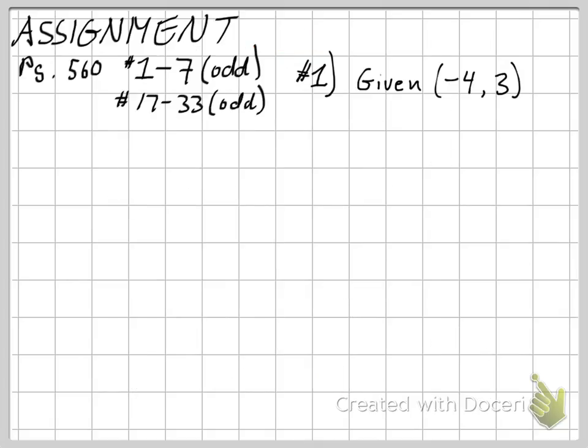Alright, here's your assignment. And let's do number one together. Alright, so what are we going to do? We're going to plot this. And after we plot our negative four comma three, the negative four is going to be our side adjacent. And the three is going to be our side opposite.